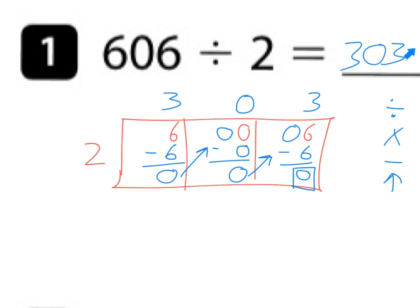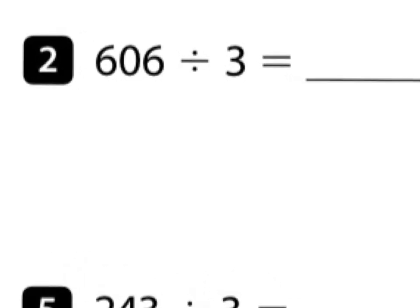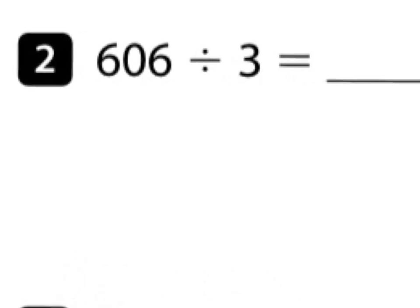Some of you are already getting to the point where you can see that 2 goes into 6 three times, 2 goes into 0 zero times, and 2 goes into 6 three times — so you can mentally get 303. You can just take half of 6 and get 3. Eventually we want you to get to the process where you can do these mentally, and a lot of you are already getting there. Number two: 606 divided by 3. I can already tell that 6 ÷ 3 = 2, 3 goes into 0 zero times, and 3 goes into 6 two times — so the quotient is 202.